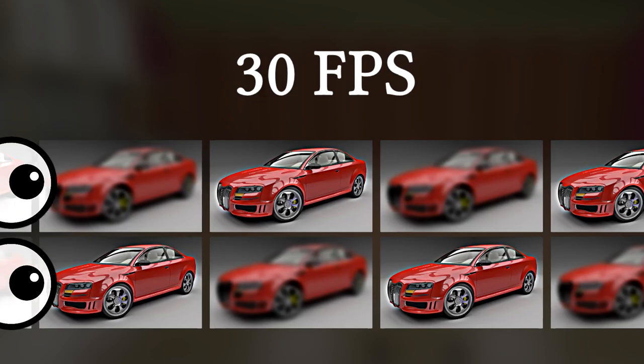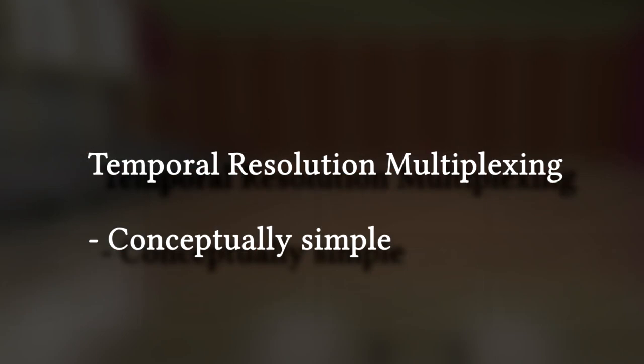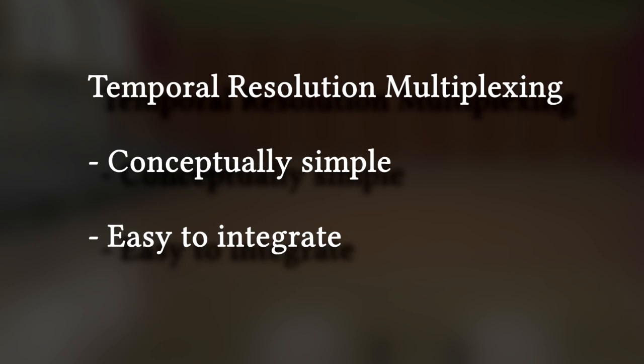Because the visual system has a finite integration time, consecutive frames are fused, producing a sharp image. This works because the visual system is insensitive to both high spatial and temporal frequencies. TRM is conceptually simple and easy to integrate into current rendering pipelines, but some care is needed to achieve a convincing result.